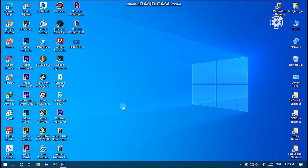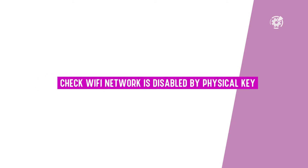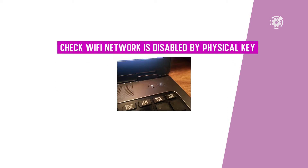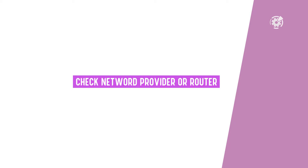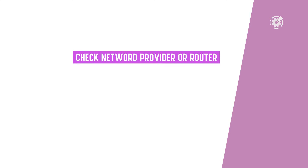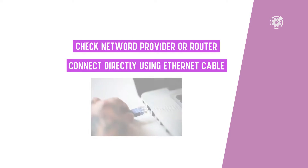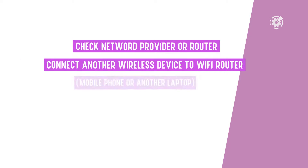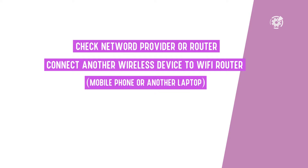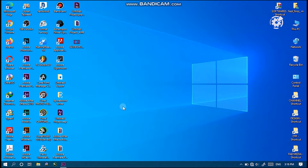First, before changing any settings on your device, check whether the Wi-Fi network is enabled or disabled by the physical key, which is available on some laptops — if it's disabled, just press and enable it. Next, check if the problem is coming from your internet service provider or your Wi-Fi router equipment by connecting directly using an Ethernet cable. Also try connecting another wireless device like a smartphone to your Wi-Fi router. If other devices are able to connect, there's a chance the problem is coming from your laptop, in which case apply one or more of the following fixes.